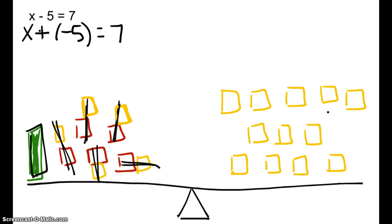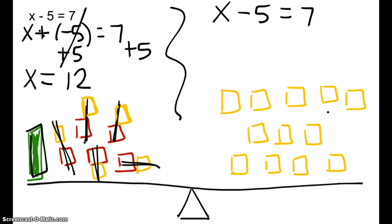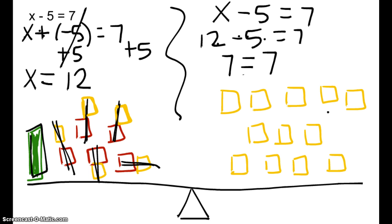So let's figure out what we did algebraically. We had x plus 5 negatives, so we added 5 to each side, creating a zero pair, and we think x equals 12. Now substitute it back in: x minus 5 equals 7 becomes 12 minus 5 equals 7. What is 12 minus 5? Don't stop here — keep going. 12 minus 5 is 7. Does 7 have equal weight as 7? Yes. Now go back and box your final answer.